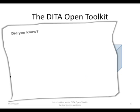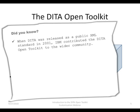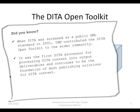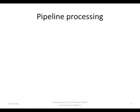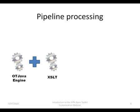Did you know? Conceptually the Open Toolkit works as a pipeline processor with different steps. Some steps involve the processing logic of the Open Toolkit's Java engine, and some steps involve an XSLT processor.